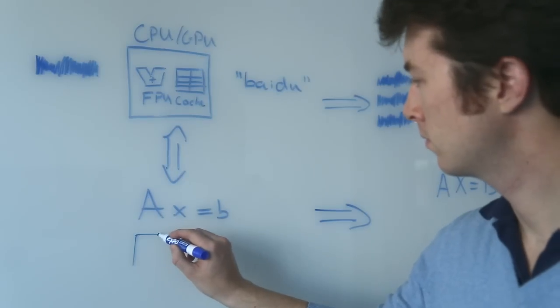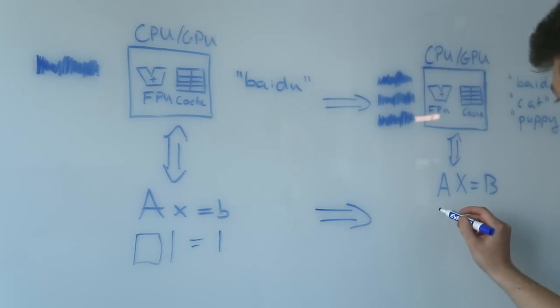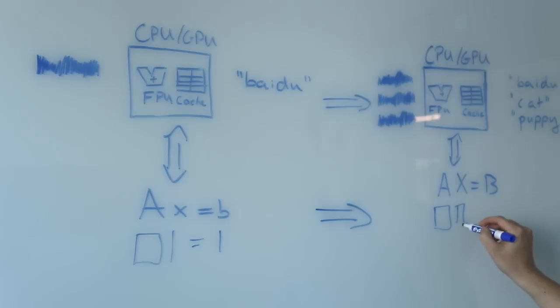When we batch, we essentially turn a matrix-vector multiplication into a matrix-matrix multiplication, and that allows us to use caches and SIMD instructions much more effectively.